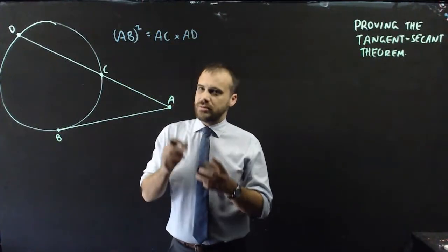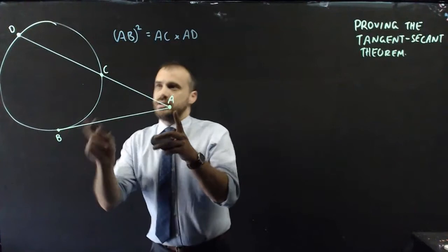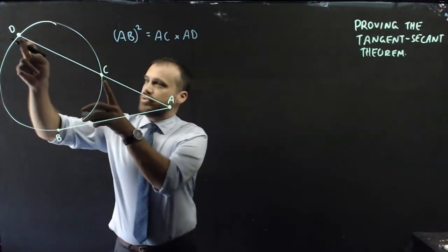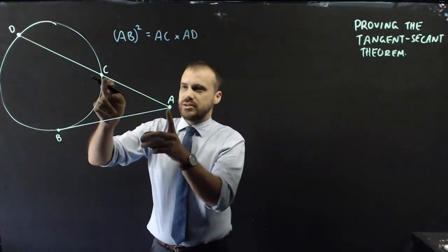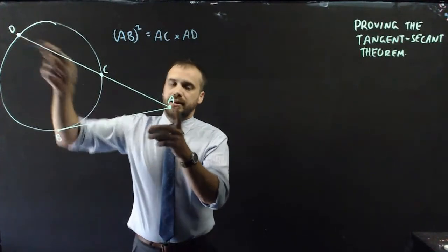Really important because a lot of students are going to make a mistake and say this squared is equal to this times this, but it's not. It's the thing outside times this long thing here.